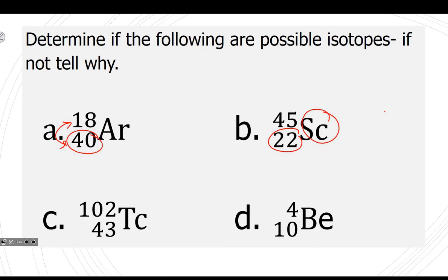For option D, Be has a mass of about 9 and atomic number 4, so they're flipped — that's wrong. For option E, the numbers are also flipped. Just remember: the top number has to be the bigger one, and it's usually about 2 times the atomic number.